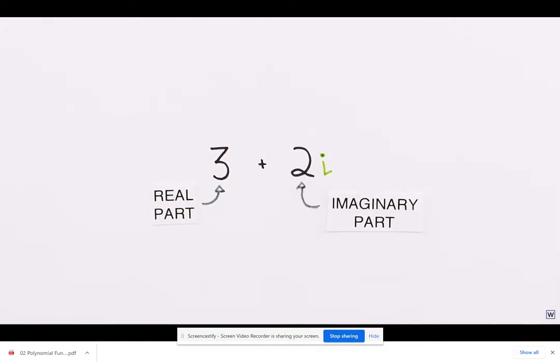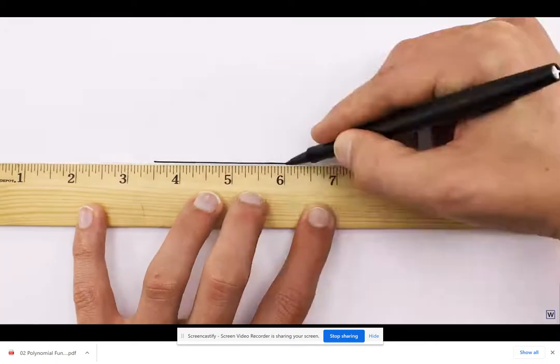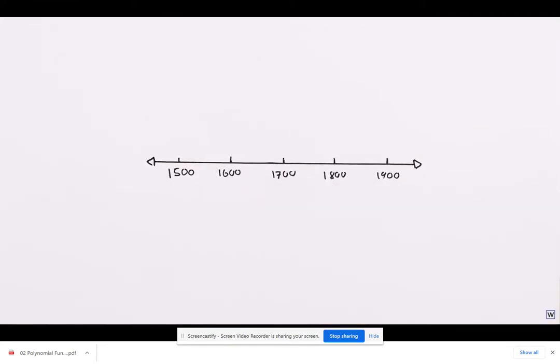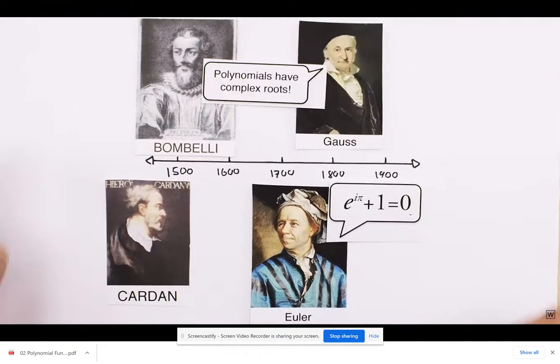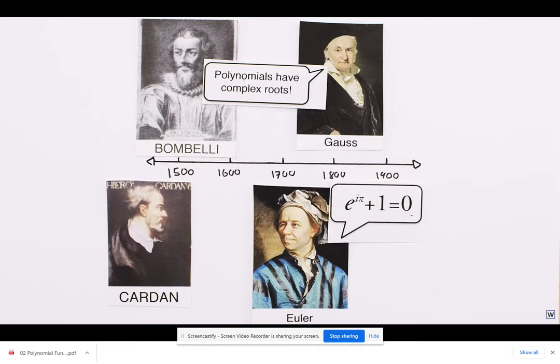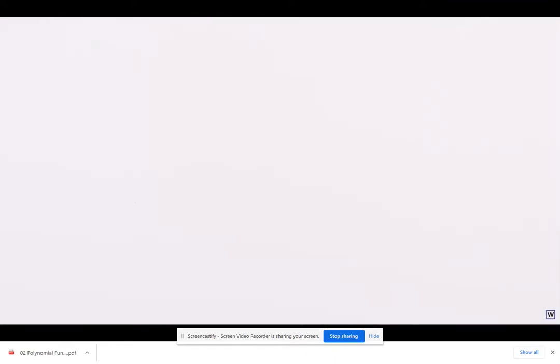What is remarkable about this time period is that although imaginary and complex numbers were used in calculations and derivations, the deeper meaning behind these numbers was left undiscovered for over 200 years after Bombelli's death. Before we dive into this deeper meaning, let's think about i algebraically for a moment.